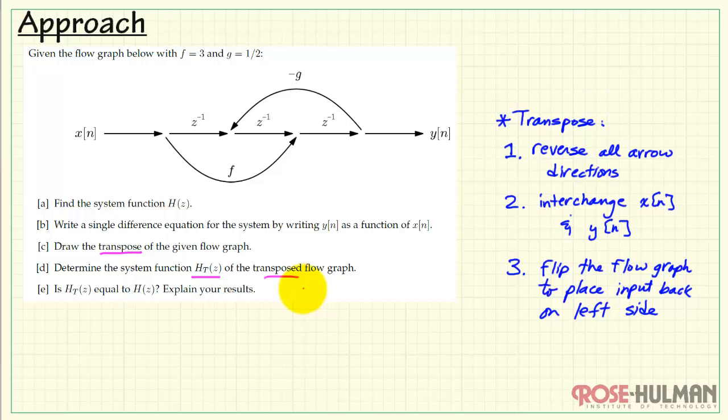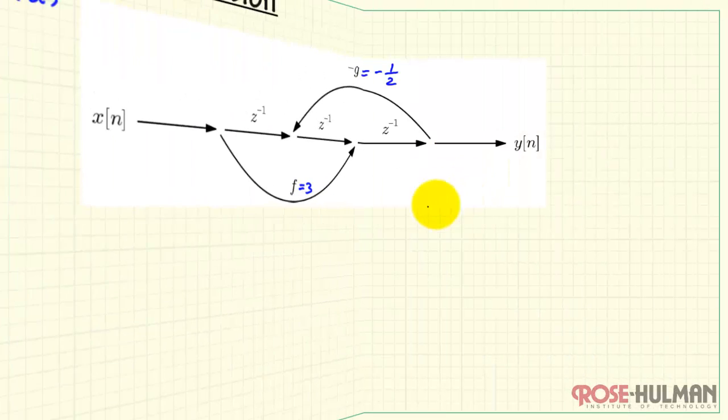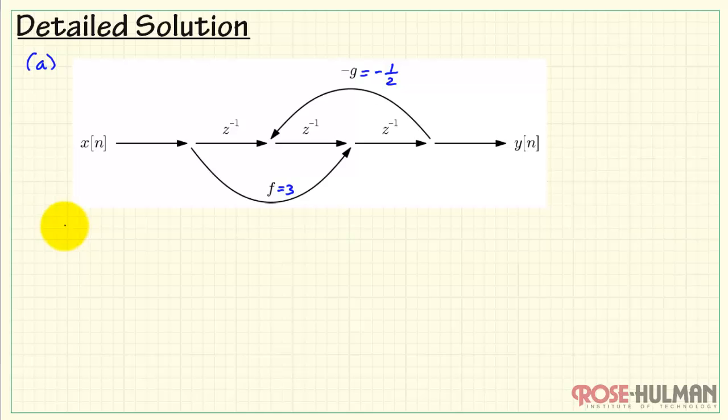In part d, we want to determine the system function of the transposed flow graph that we just created. For this, we use the same procedure as we did in part a. Finally, we want to look at the two system functions and determine whether or not they are equal. We expect the answer to be yes due to the flow graph transposition theorem, which says that the transposed flow graph is equivalent. Let's move into the detailed solution.